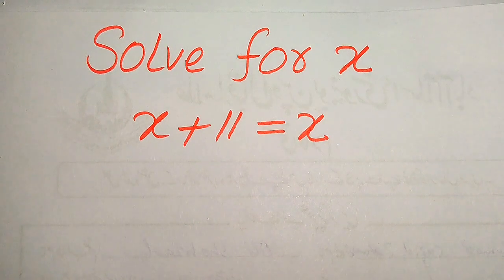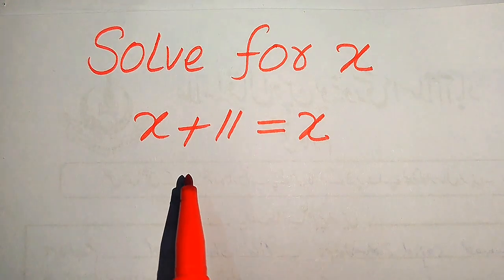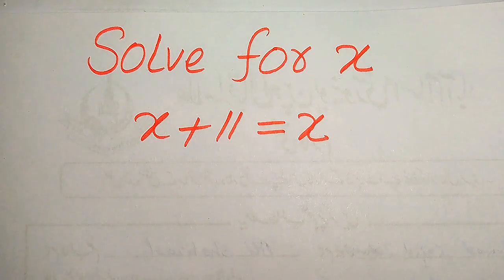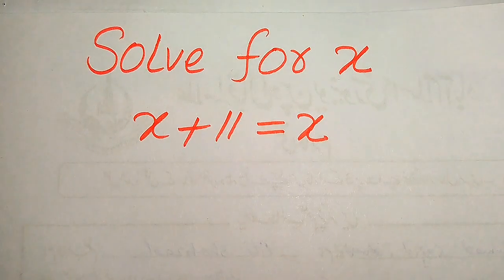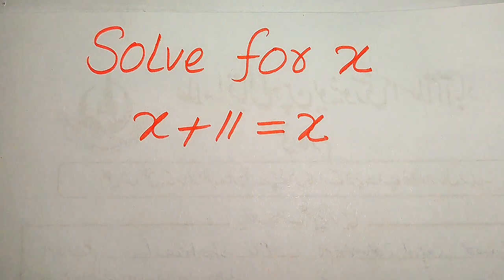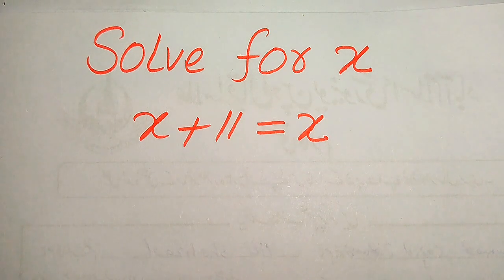Hello everyone. How to solve this problem for the values of x, if we have √(x + 11) = x. We solve this problem for all the values of x. First, we find all the roots of this equation, and at the end we will check which of the roots are solutions and which are extraneous roots of this equation.